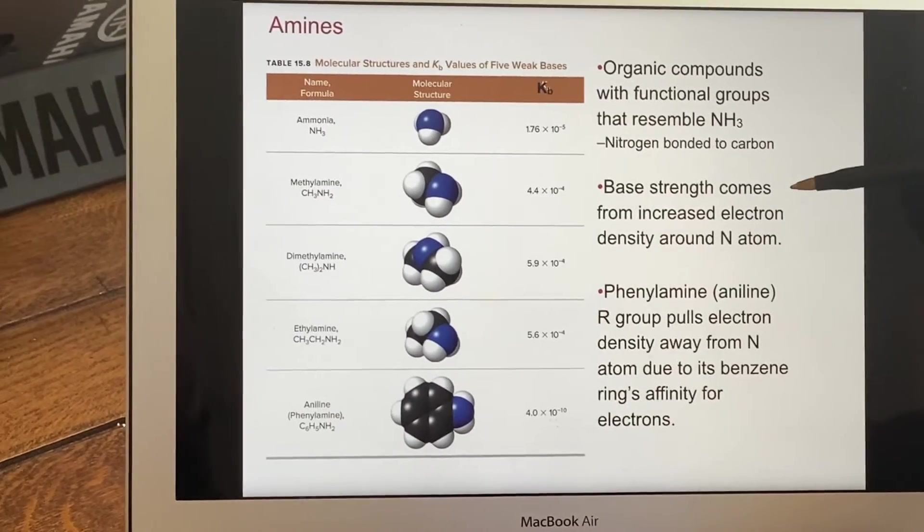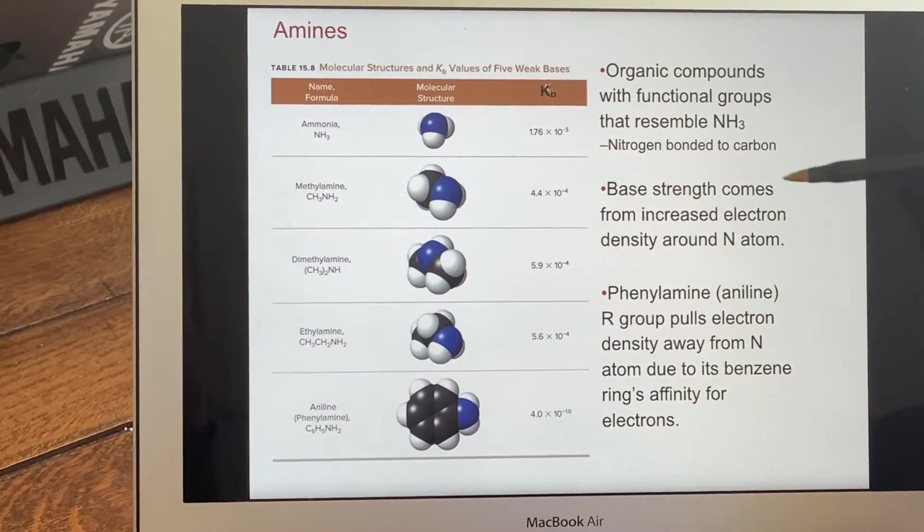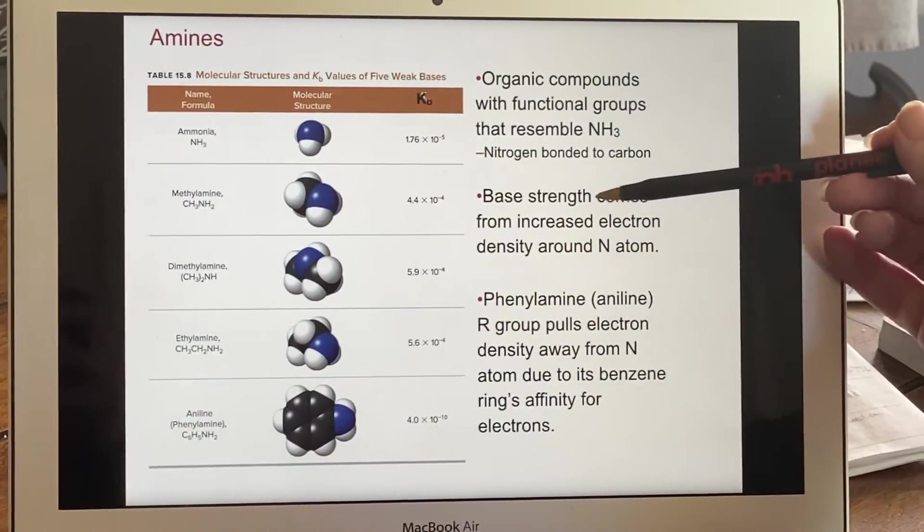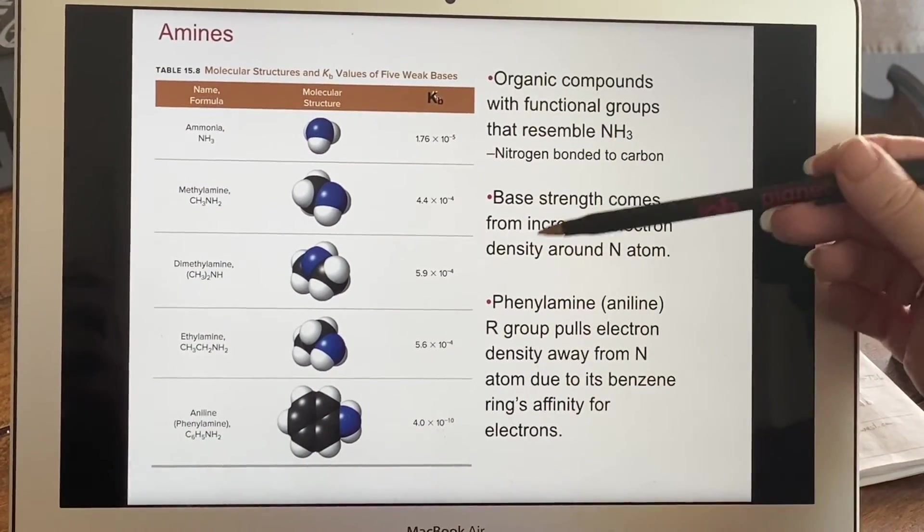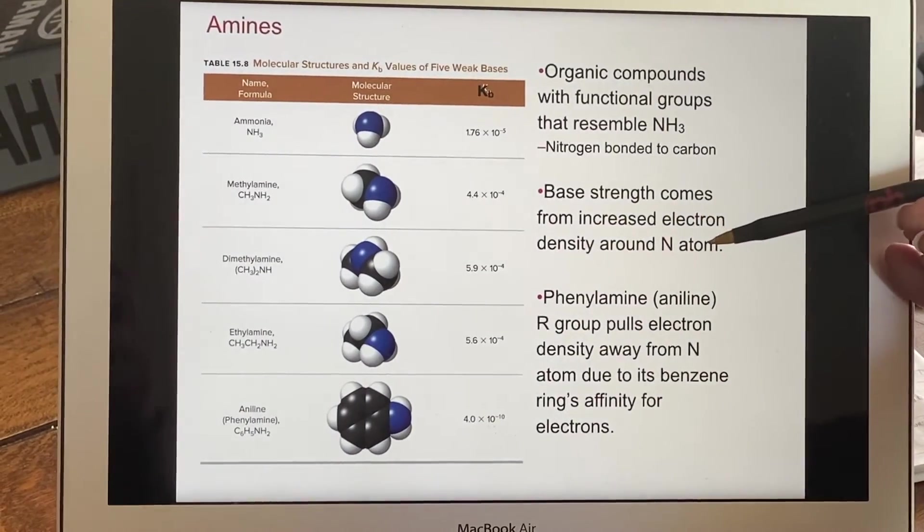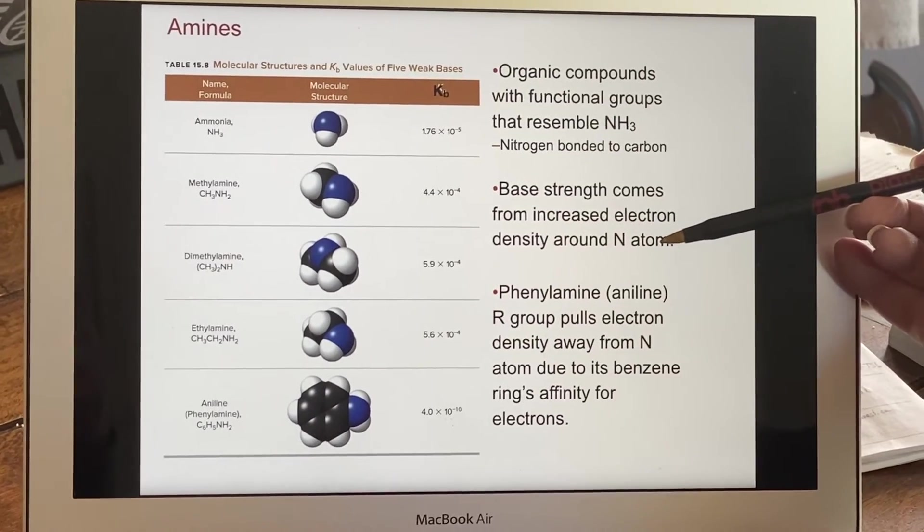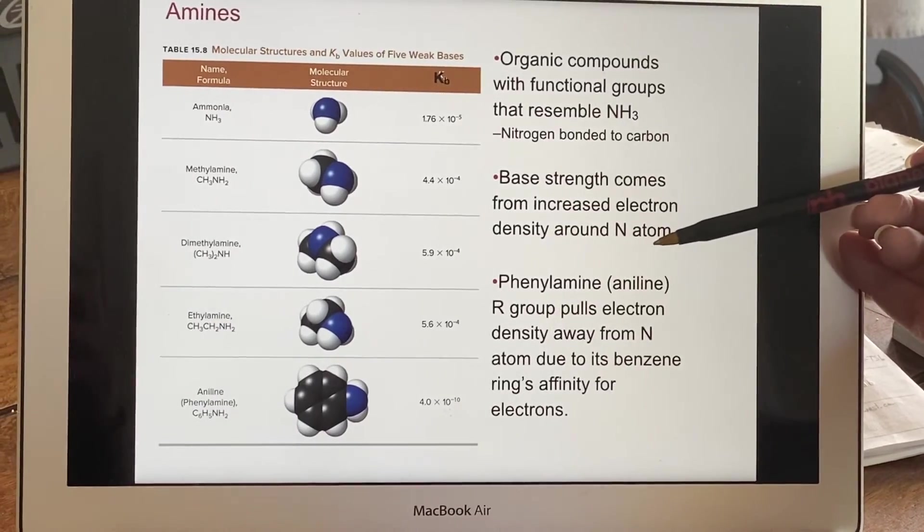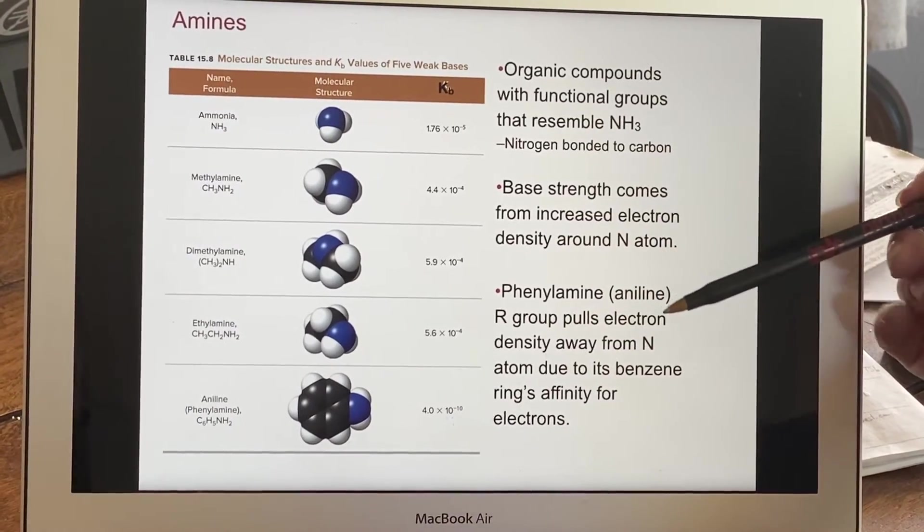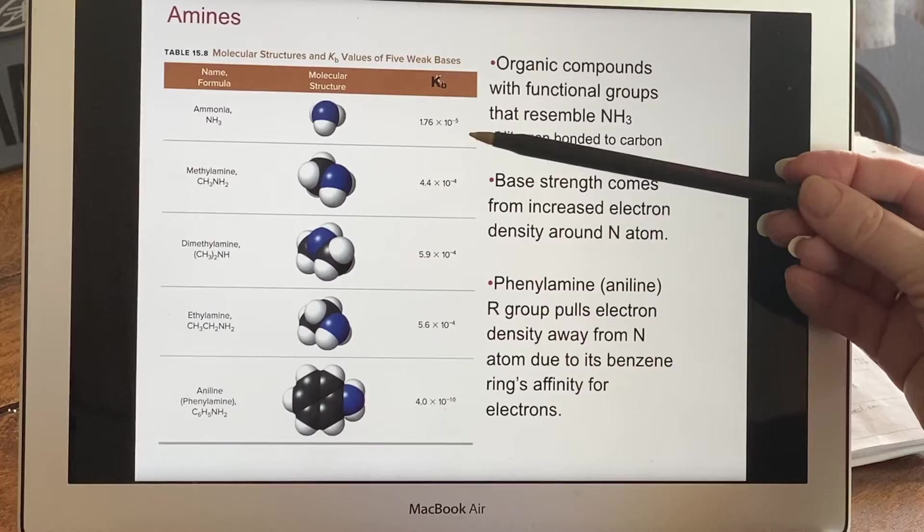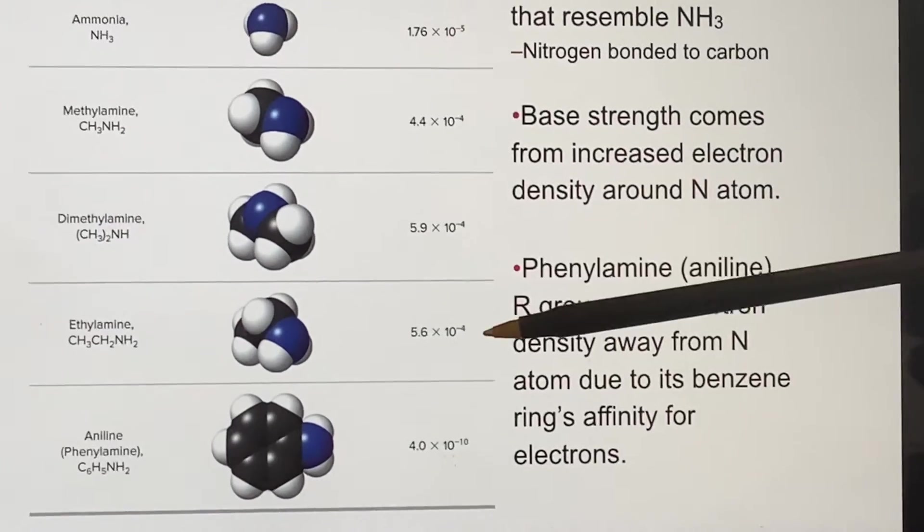And the base strength, why are they basic? Because once this happens, it will increase the electron density that is around the nitrogen. Because the nitrogen is more electronegative than the carbons that are attaching to it. So we will see that we can increase the strength of the base by doing this.